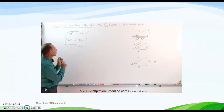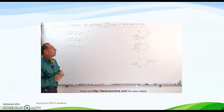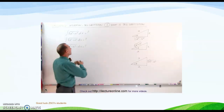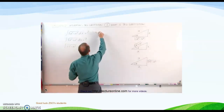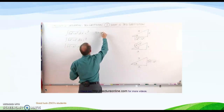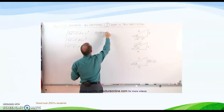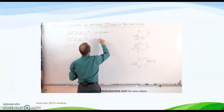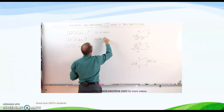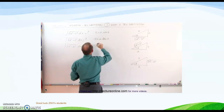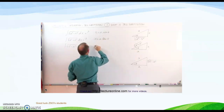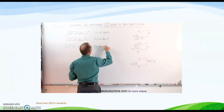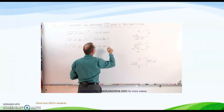What we do is substitute in for x a particular value. In the first case, we let x equal a times the sine of theta. In the second case, we let x equal a times the tangent of theta. And in the third case, we let x equal a times the secant of theta.